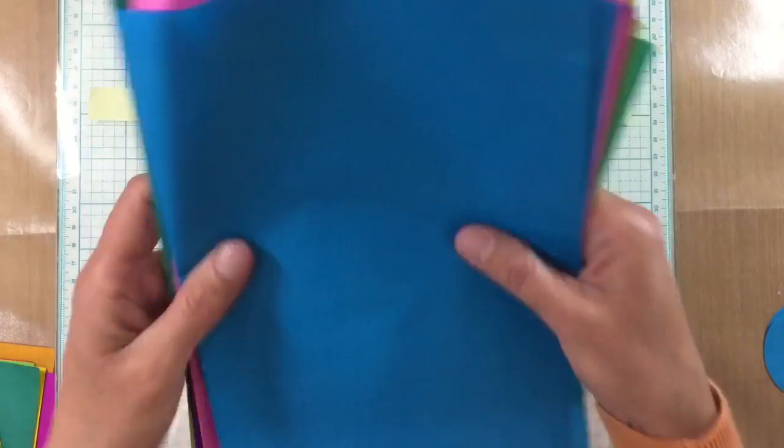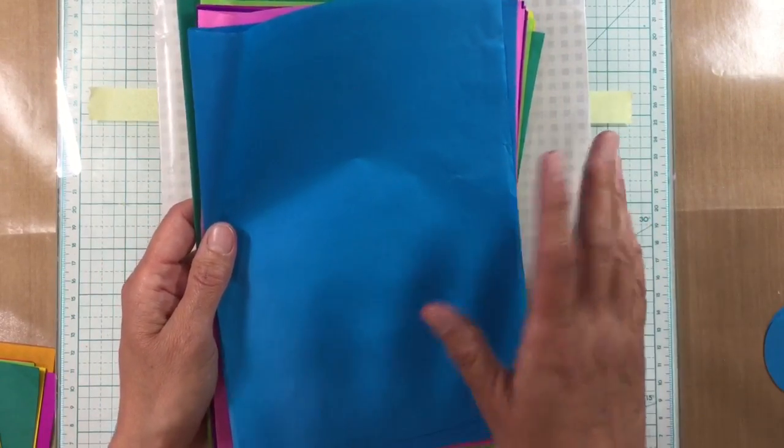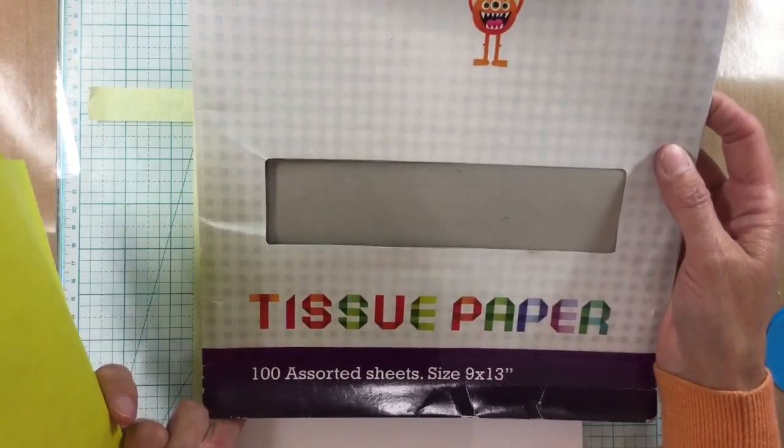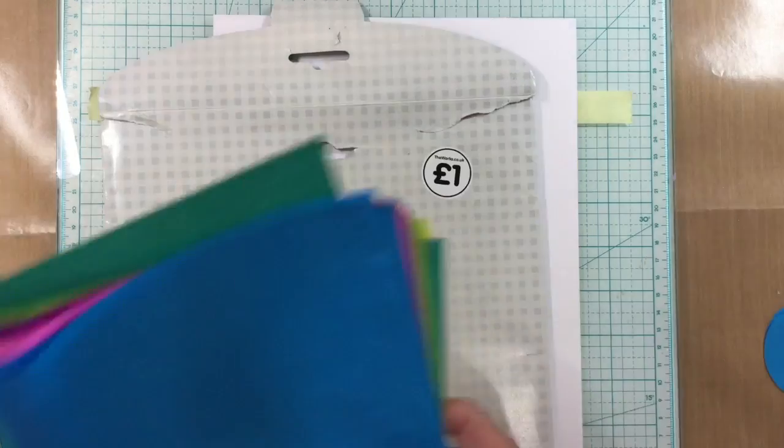Now this is bleeding tissue paper which reactivates when it comes near water. I got mine from The Works which is a shop here in the UK and this pack of 100 sheets was a pound.